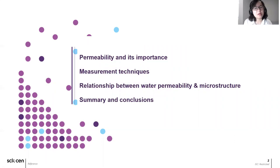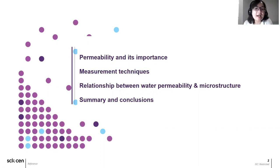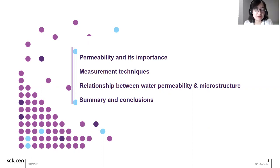First, I will start with a brief introduction about water permeability and its importance in the performance of alkali-activated materials, AAM. Then the techniques used for determining the properties are indicated. Following that, the results of permeability coefficient of AAM are illustrated as well as the correlation with the structure of the examined materials. And finally, there are some conclusions based on our obtained results.